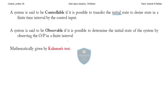Mathematically, this is given by Kalman's state test, for both controllability and observability. First, we need to know the state equations: ẋ = Ax + Bu and y = Cx. To check whether the system is controllable or observable, we use specific matrices.